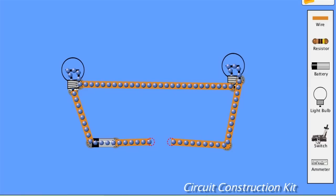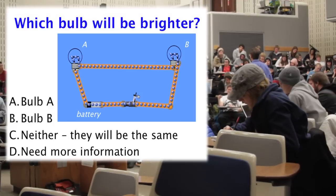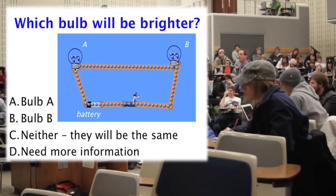So set up a condition that would demonstrate that. For instance, you could put two identical bulbs in series and stop and before you close the circuit, ask students to make a prediction about which bulb do you think is brighter.